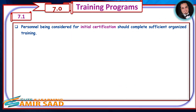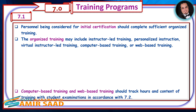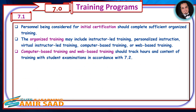Clause 7: Training Programs. Personnel being considered for initial certification should complete sufficient organized training. The organized training may include instructor-led training, personalized instruction, virtual instructor-led training, computer-based training, or web-based training. Computer-based training and web-based training should track hours and content of training with student examinations in accordance with 7.2.